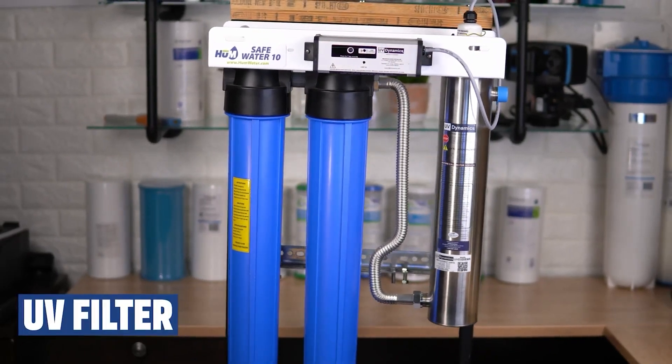Ultraviolet water filtration systems work by using UV light to disinfect water by killing or inactivating harmful microorganisms such as bacteria and viruses. Unlike other filtration methods that remove contaminants through a physical barrier or chemical process, UV filtration relies on the germicidal effects of UV light.